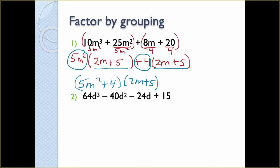For the next one, group the first two and the last two, making sure that negative sign stays with the 24. For 64d³ − 40d², the largest number dividing evenly out of both is 8, and the lowest common variable exponent is d², so the GCF is 8d². Dividing: 64 ÷ 8 = 8, d³ ÷ d² = d, leaving 8d; and −40 ÷ 8 = −5, d² ÷ d² = 1. So inside the first parentheses we have 8d − 5.